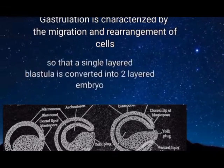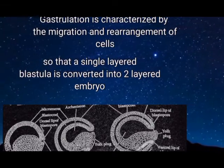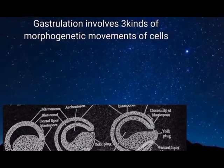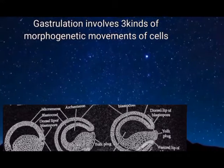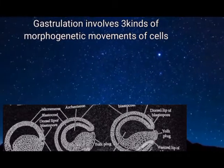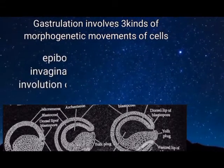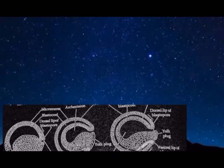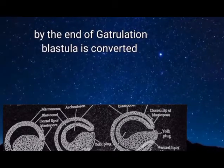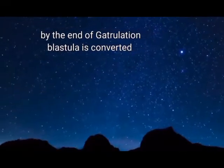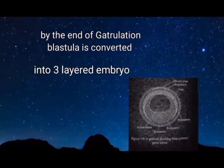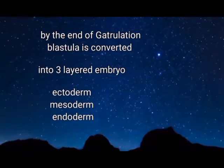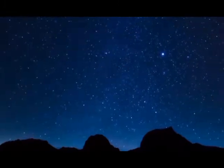Blastula stage or blastulation is followed by gastrulation. Gastrulation is characterized by the migration and rearrangement of cells so that the single-layered blastula is transformed into a two-layered embryo. Gastrulation includes three kinds of morphogenetic movements of cells: epiboly of ectoderm, invagination of endoderm, and involution of chordamesoderm. By the end of gastrulation, the blastula is converted into a three-layered embryo made up of ectoderm, mesoderm, and endoderm, covering an archenteron.